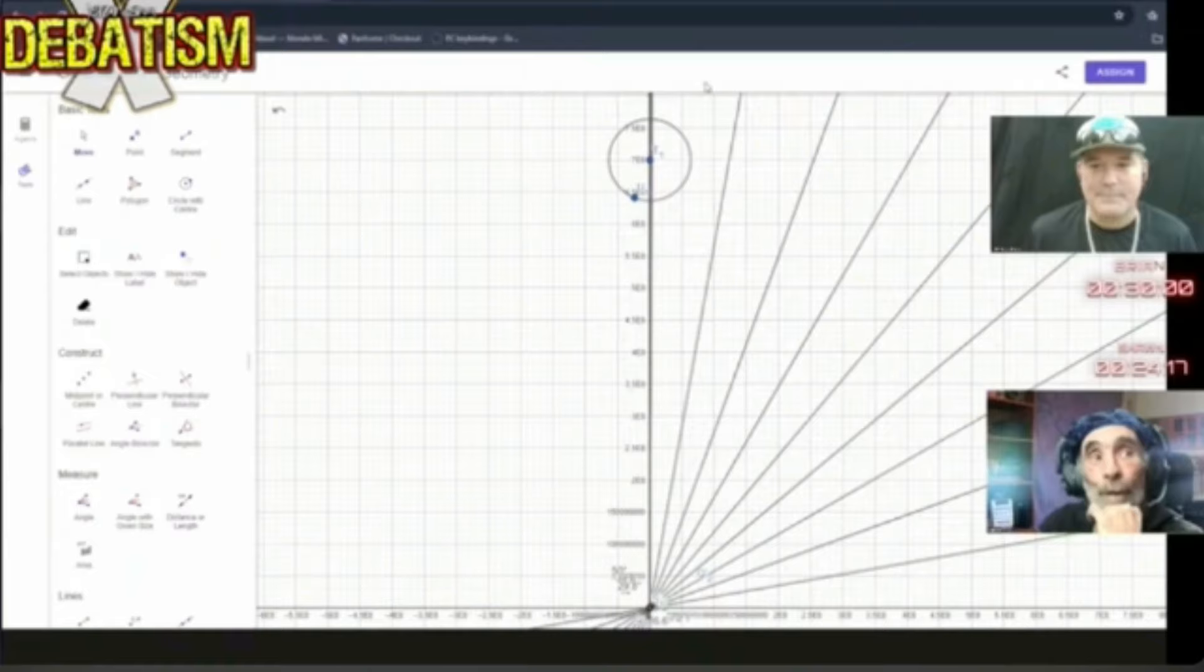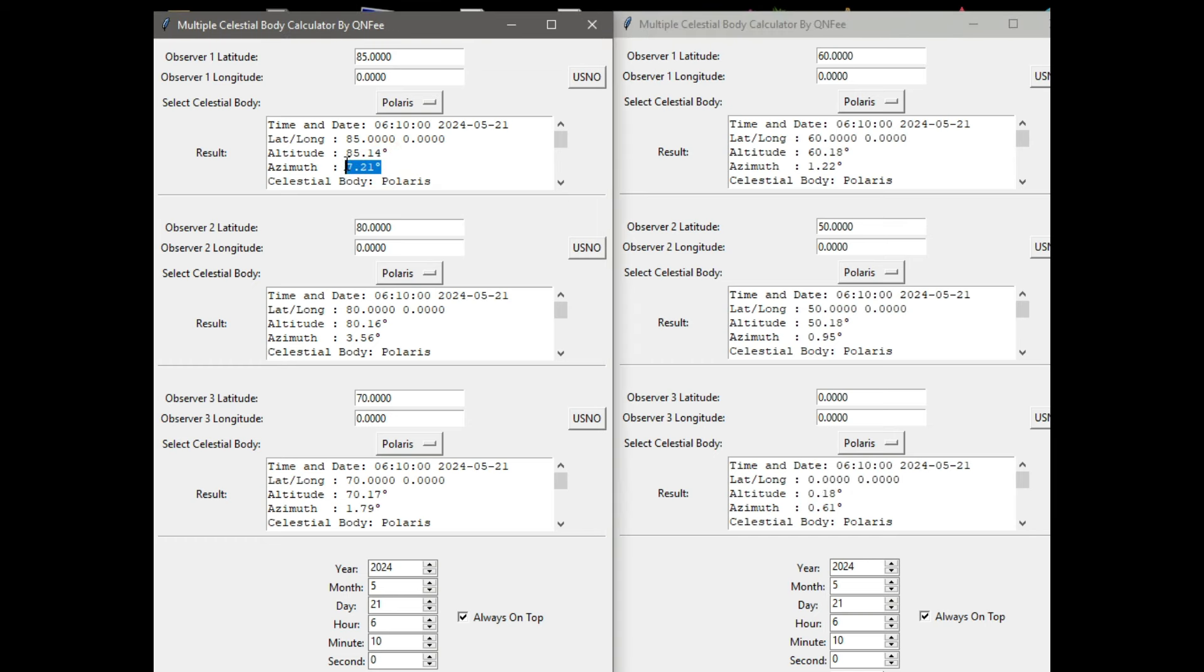That's a nice trick, Sean, zooming out and then all these lines appear to go to Polaris, like a triangulation. Do you call this to the same point in space? But what about the azimuth?